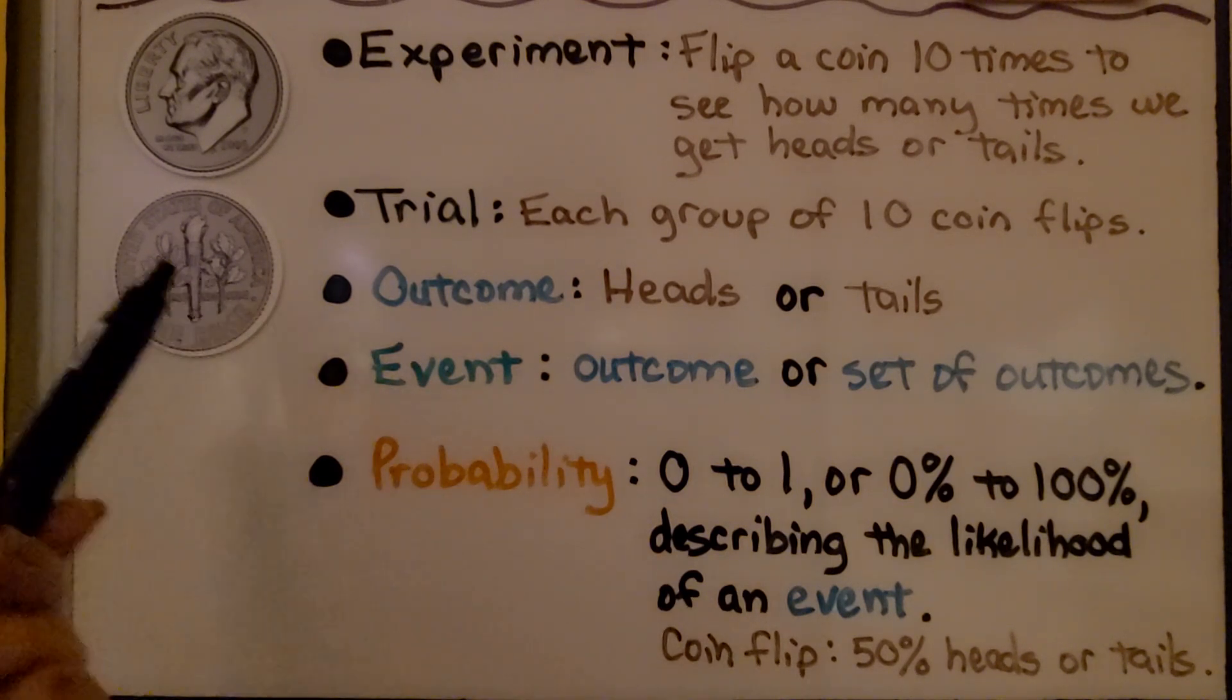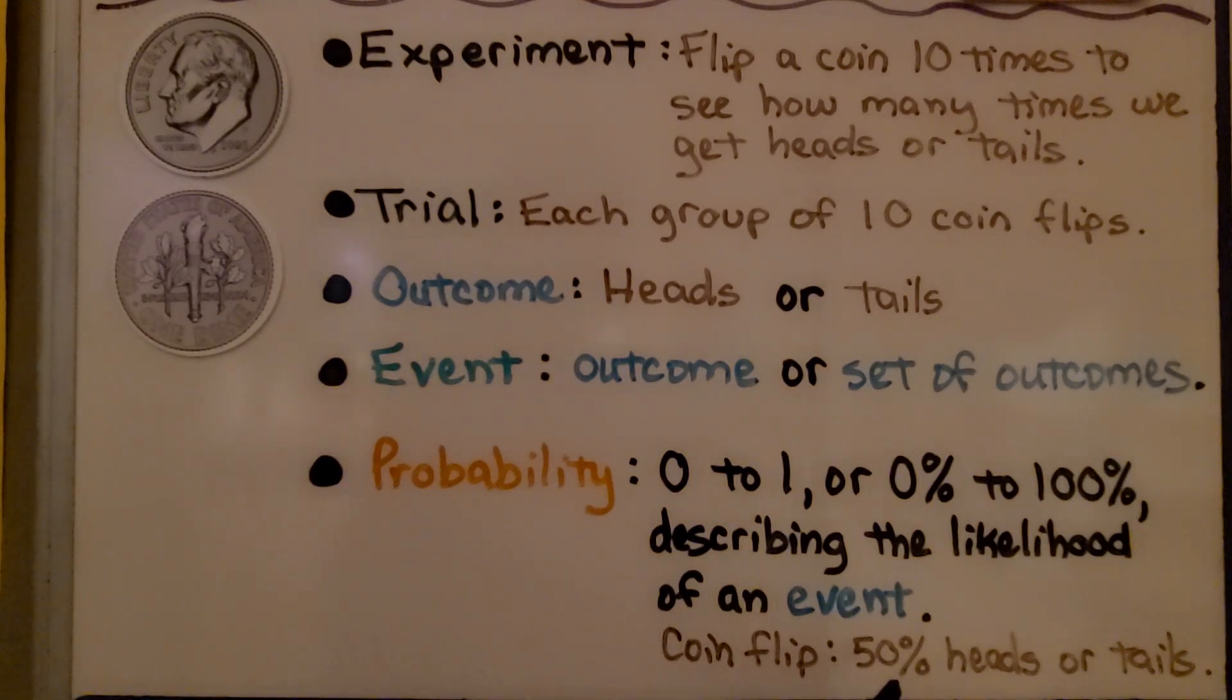The likelihood of getting heads or getting tails. Because it's a coin flip and it's only got two sides, we have a 50% chance of getting heads and a 50% chance of getting tails.